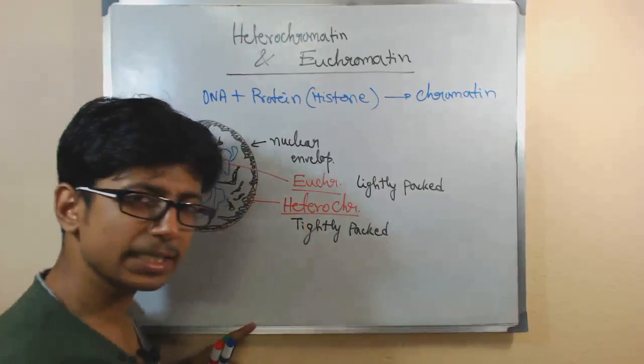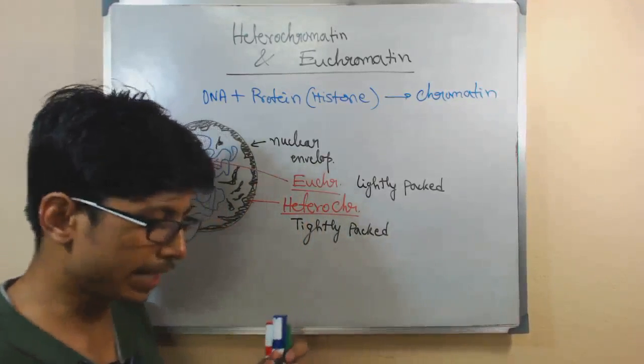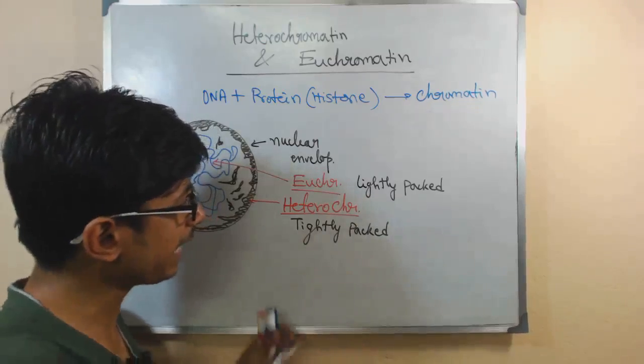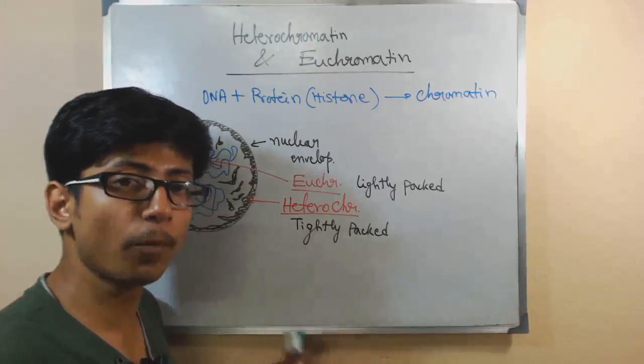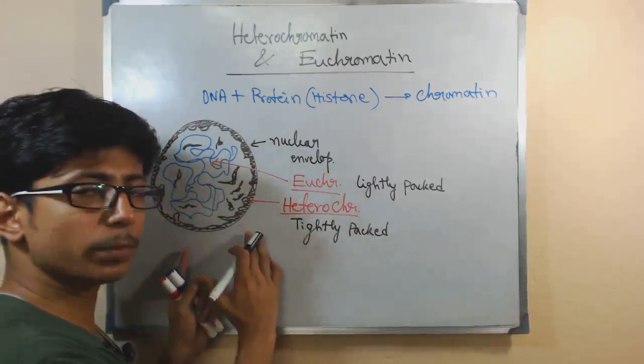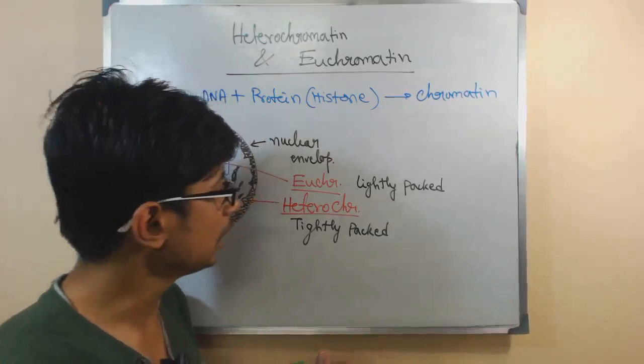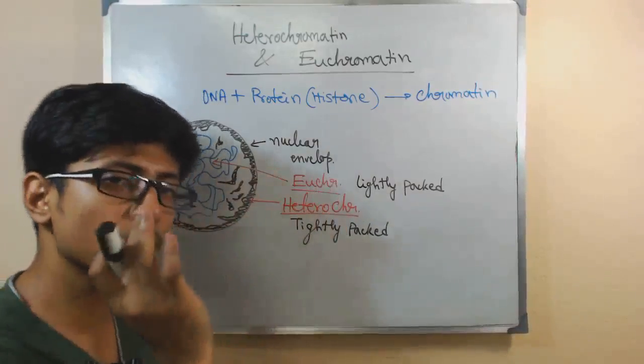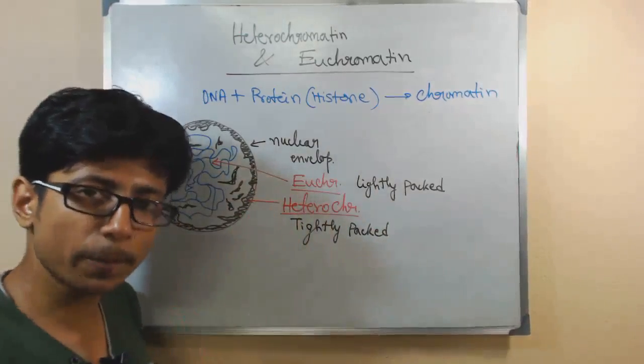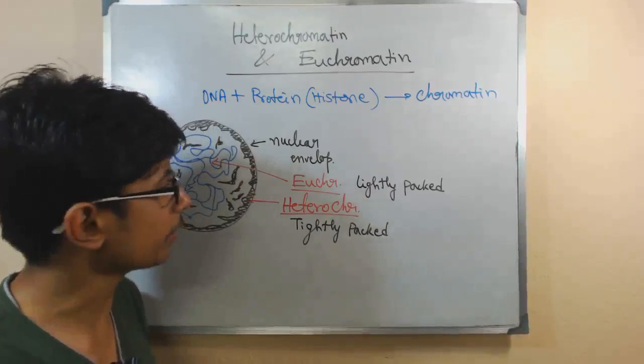Now, Heterochromatin are very compact structures wrapped around histones. They are less functional. They do not function. They are not open. The DNA that is present in this chromatin region is not that much open for the transcription replication processes. While Euchromatin is active portion of chromatin, active portion of the chromosome which functions properly, produces mRNA and does the replication stuff.